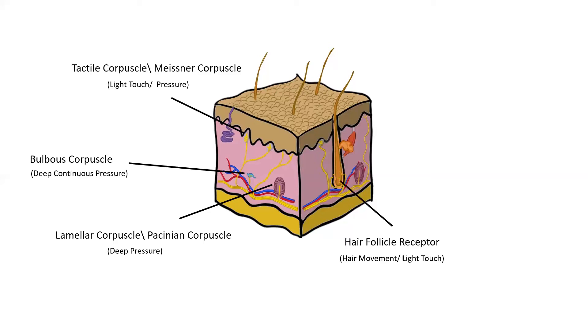Then we have hair follicle receptors, which are receptors that are around each hair follicle. And this really can detect hair movement and light touch. And this is really easy to test if you just brush your hand very gently over any of the hair on your body. You can feel that kind of tickling sensation. And that's really because of these receptors.